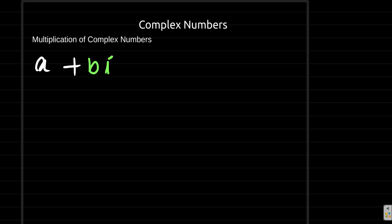Now suppose we have two complex numbers: a plus bi and another complex number c plus di. And we want to multiply them. How do we do that? Let us see.